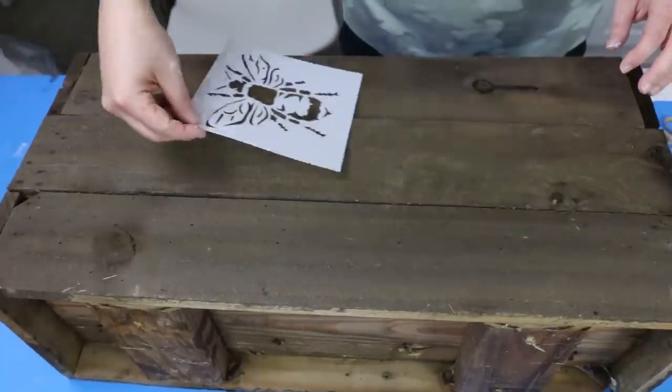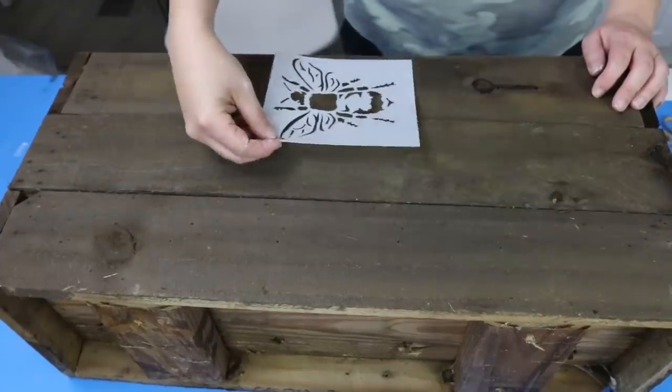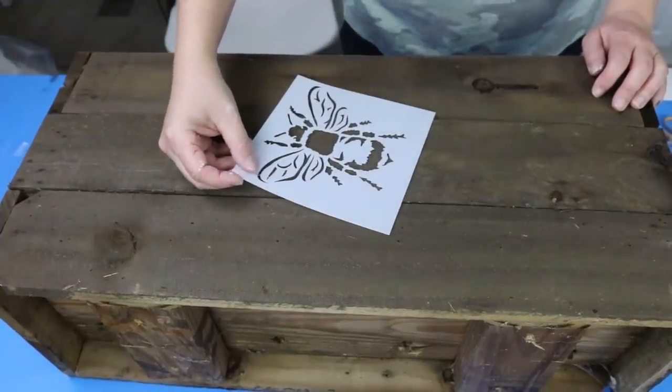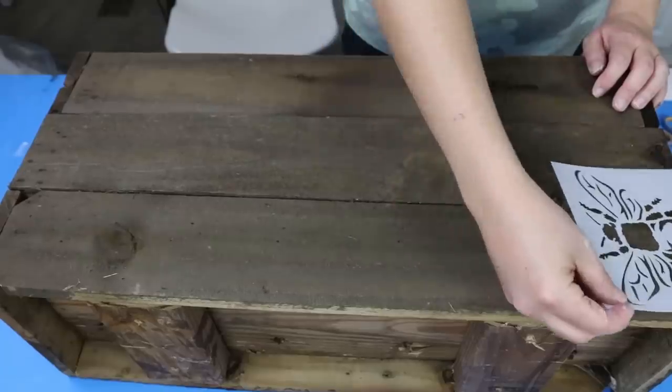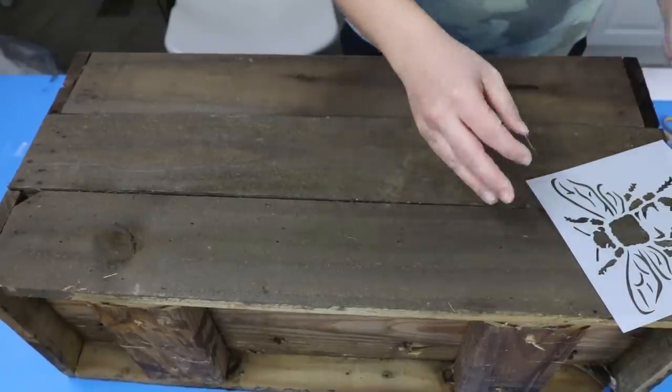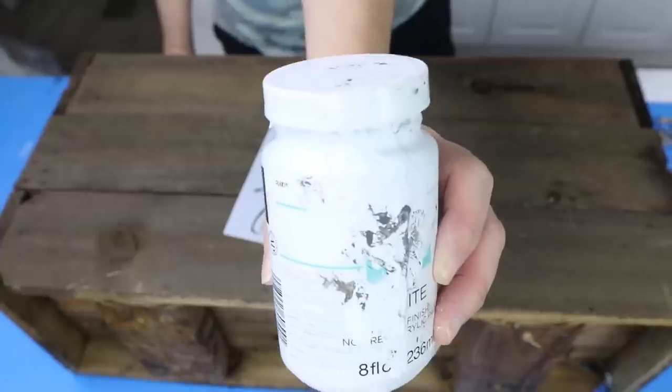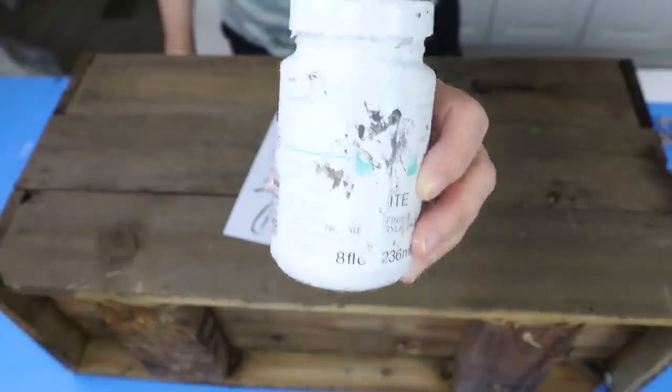So all I'm going to do on one of my planters is add the stencil three different times, just kind of changing up my pattern so it looks random. I'm gonna be using Waverly white chalk paint to stencil the bee onto the planters.